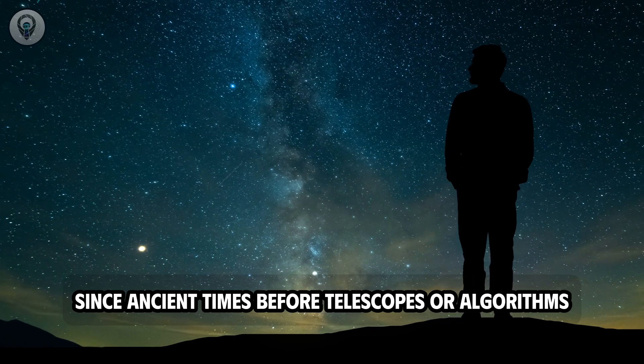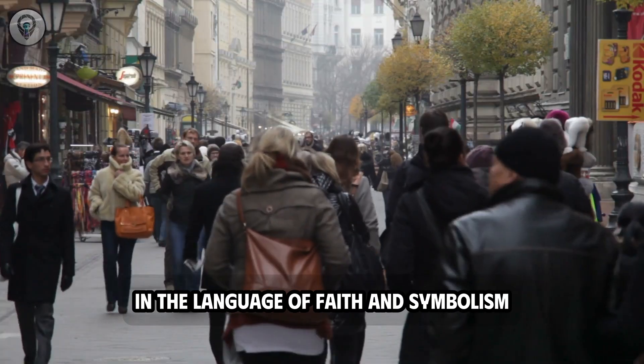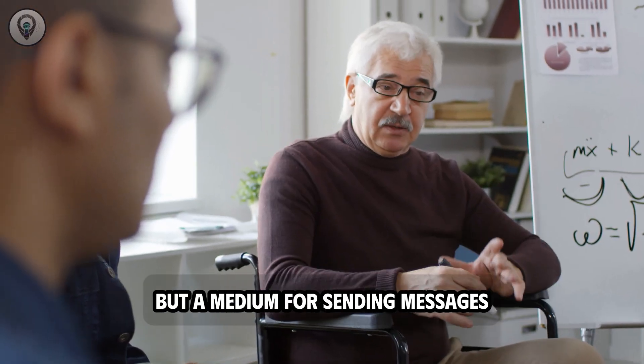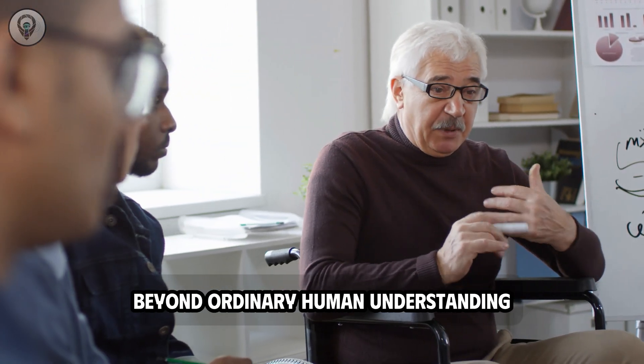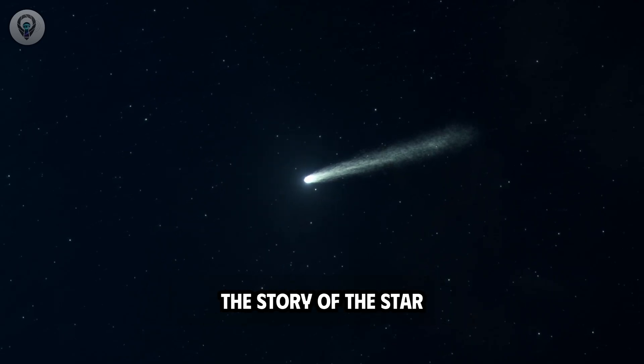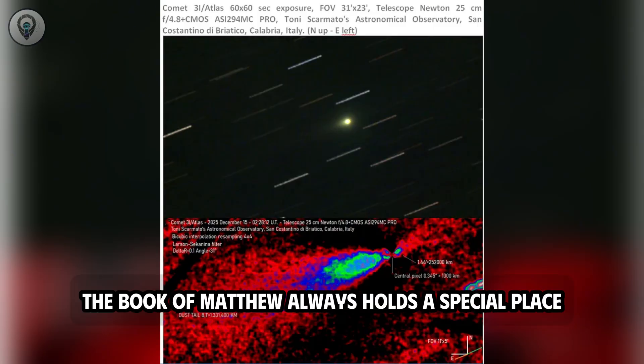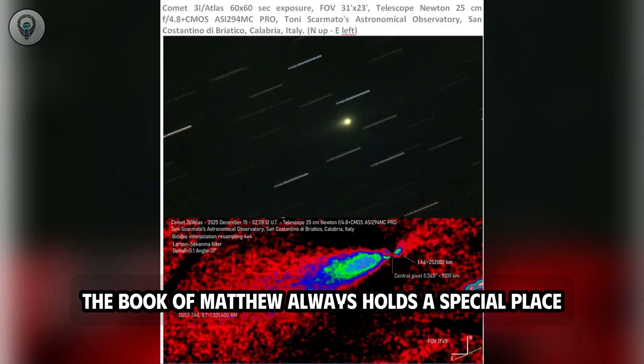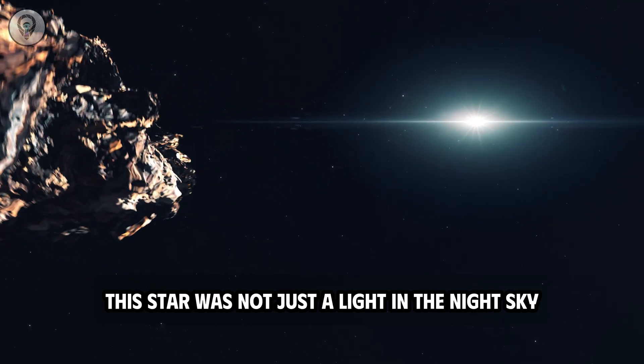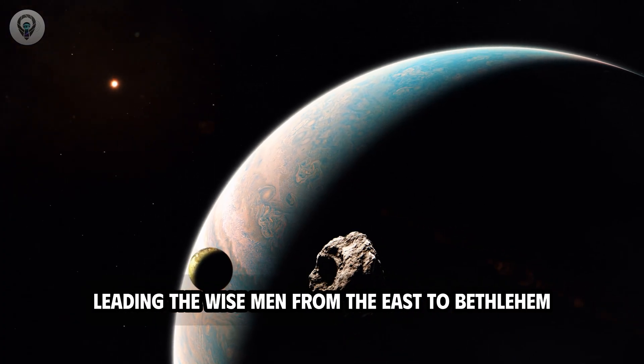As modern scientists approach the 3i Atlas phenomenon with orbital data, physical models, and precise measurements, history reminds us that humans have observed the sky in a completely different way since ancient times. Before telescopes or algorithms, anomalous celestial phenomena were not only seen, but also recorded in the language of faith and symbolism, as if the sky were not merely a physical space, but a medium for sending messages beyond ordinary human understanding. Among those ancient records, the story of the star that appeared at the time of Jesus's birth mentioned in the New Testament, the book of Matthew, always holds a special place.